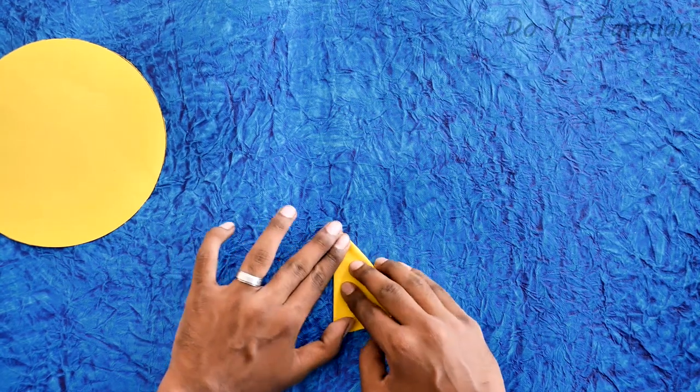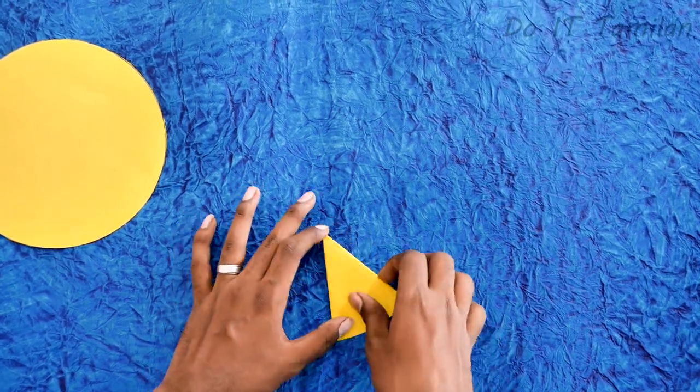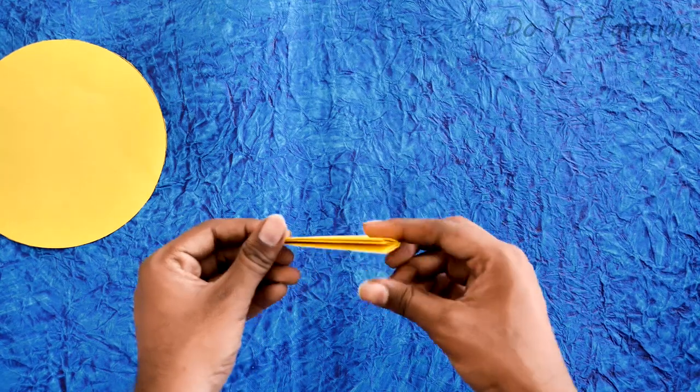Third folding is important. So connect the paper like this. You have a conical shape. Here we are going to cut the paper.